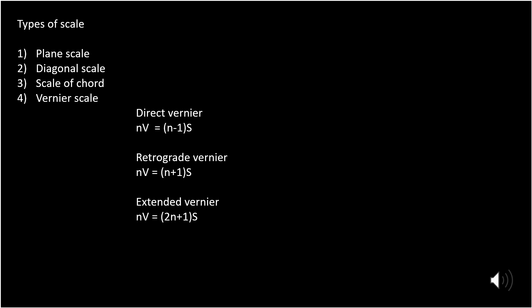Here we discuss about the types of scale. There are four types of scale: first is plane scale, second is diagonal scale, third is scale of chord, and fourth is vernier scale.